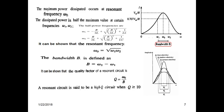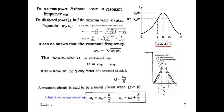Generally, we define a circuit to be a high-Q circuit if the value of Q is greater than 10. For high-Q circuits, instead of using the full formula for omega 1 and omega 2, we can use the simplified formula: omega 1 equals omega 0 minus B over 2, and omega 2 equals omega 0 plus B over 2. These two equations can be used provided Q is greater than 10.